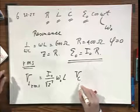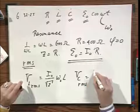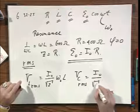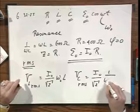Well, the voltmeter over the capacitance, RMS, would read I zero divided by the square root of two times one over omega zero C.